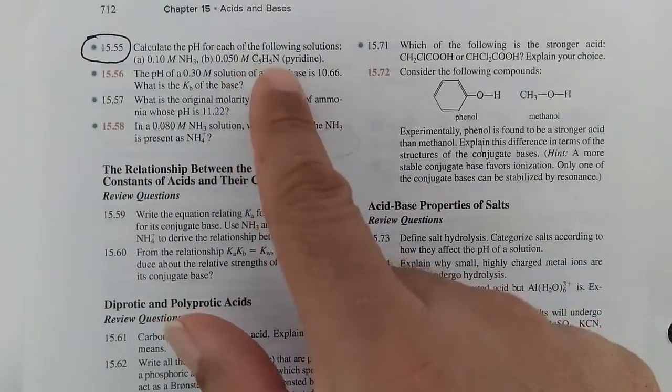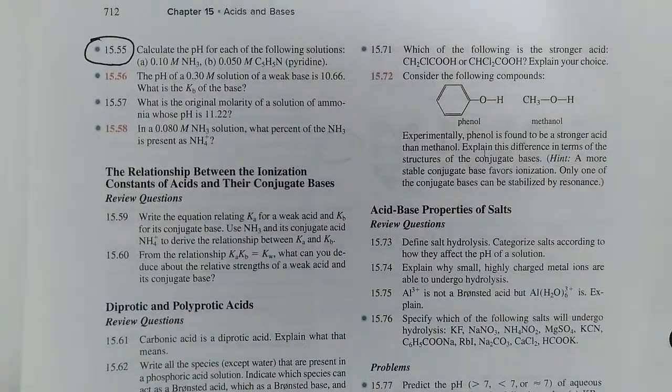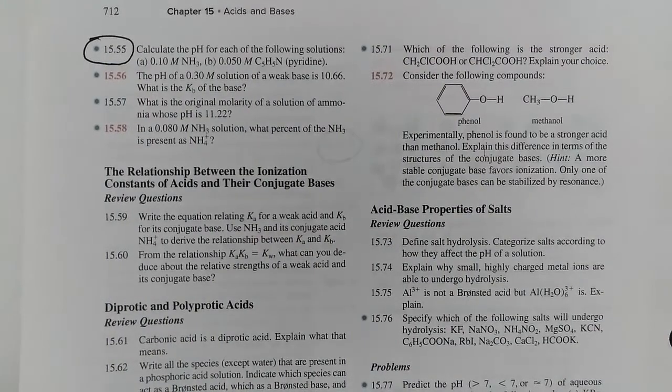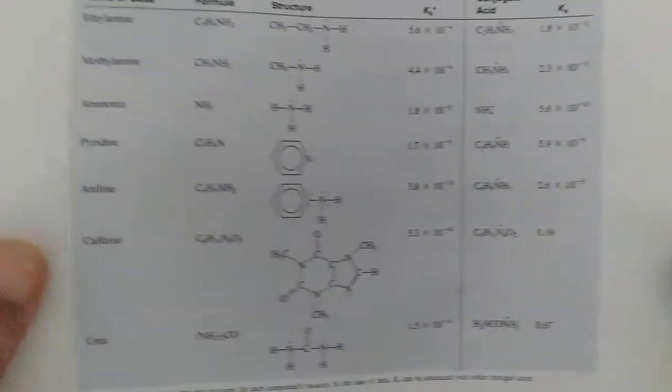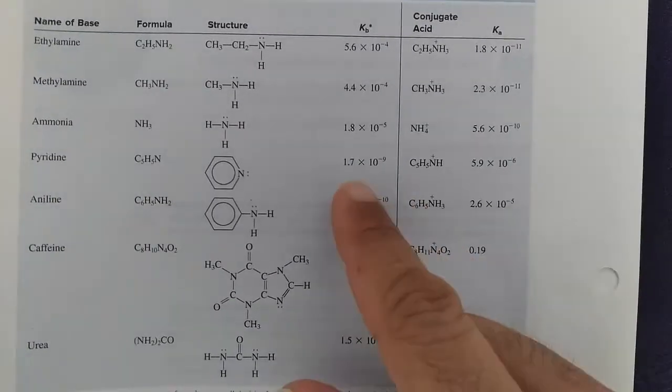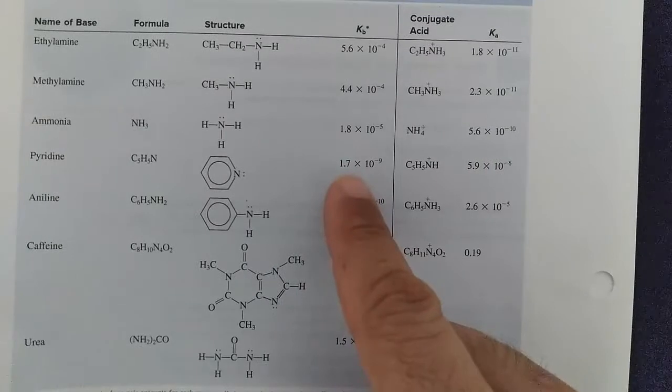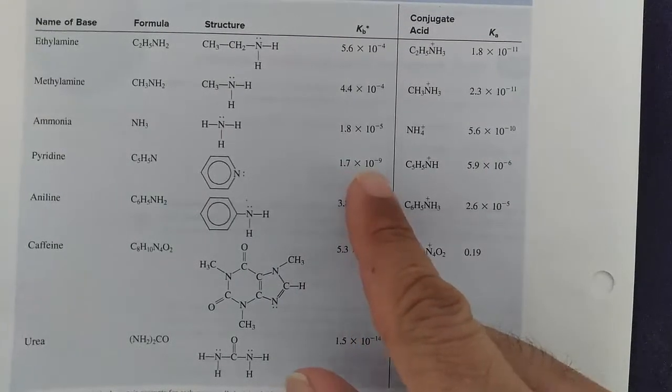All right, pyridine is a weak base. We can get our Kb for that reaction looking at our table here. This is from your textbook. If you don't have a textbook, you can get it from any internet source. Pyridine: 1.7 times 10 to the minus 9.